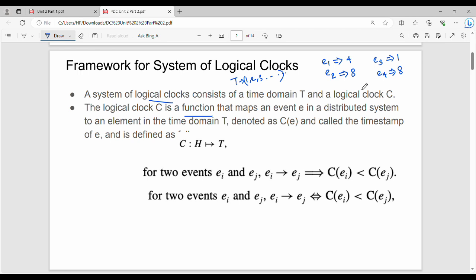The logical clock C is a function which maps every event in my entire distributed system to a value in my time domain. C is a function from H to T.